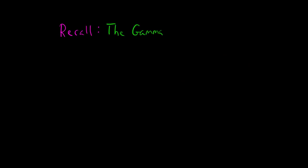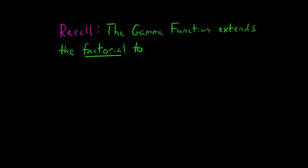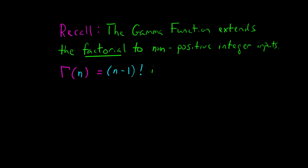Let's first take a step back and recall what the gamma function is. The gamma function was developed as a way of extending the concept of the factorial to the domain of inputs beyond just the positive integers — it can include non-positive integer inputs as well, with the exception of negative integers. It's defined so that gamma of n equals n minus 1 factorial, and this definition is valid for all n except 0 and the negative integers.